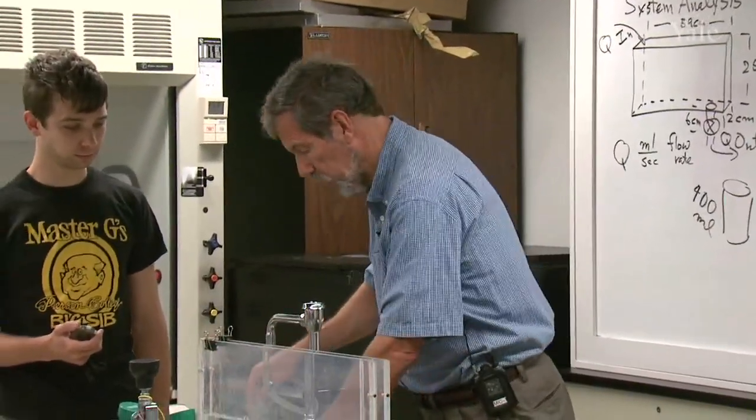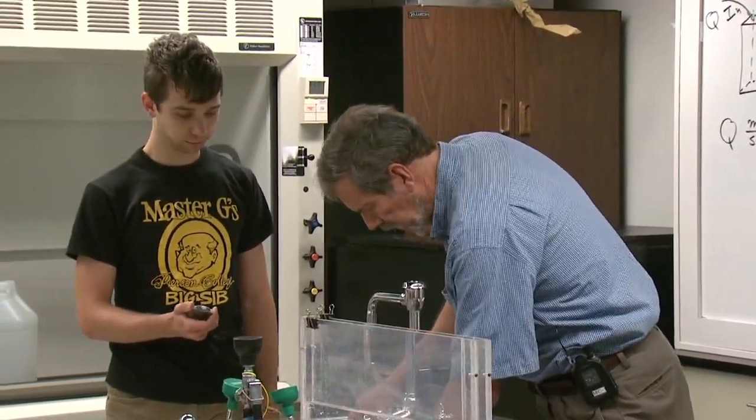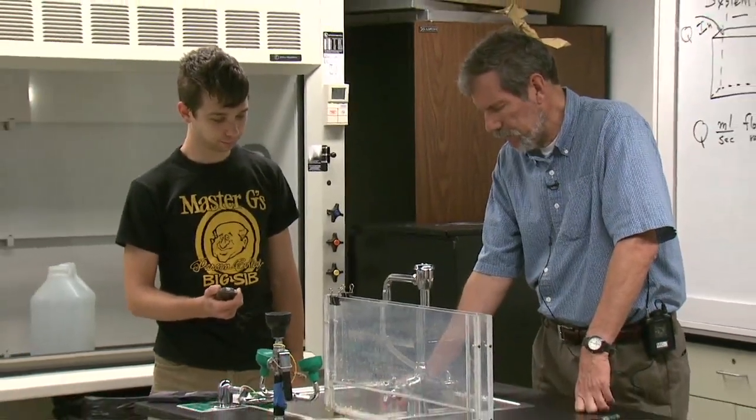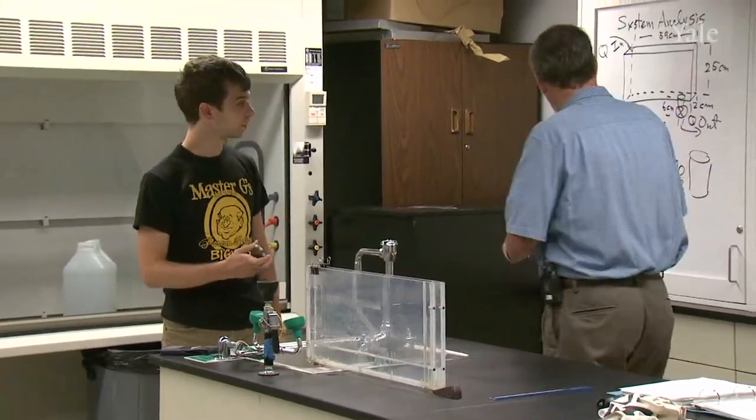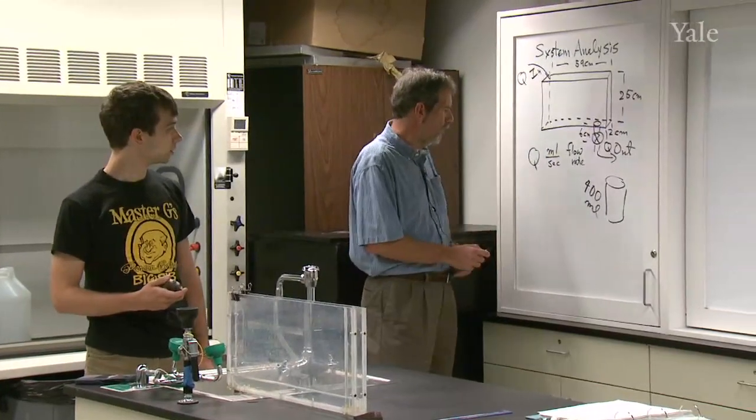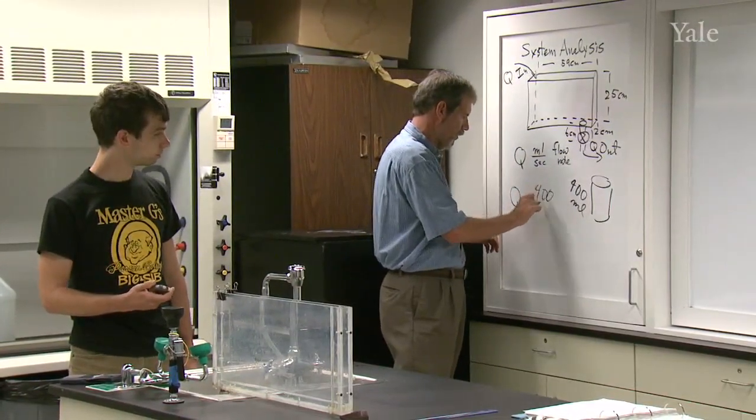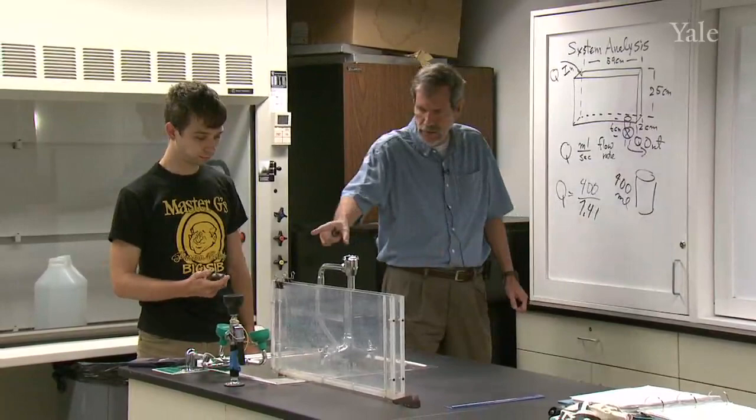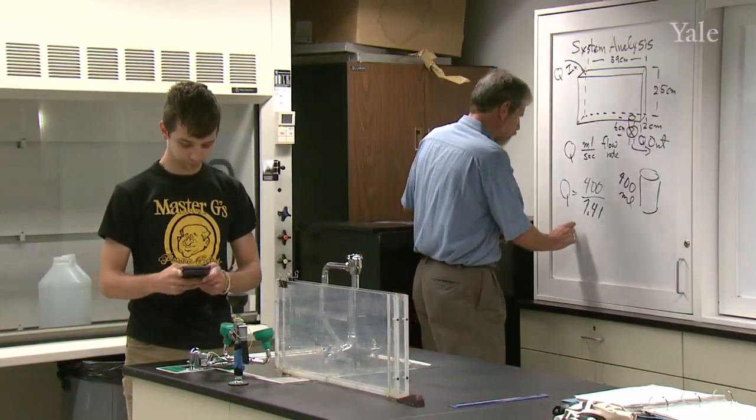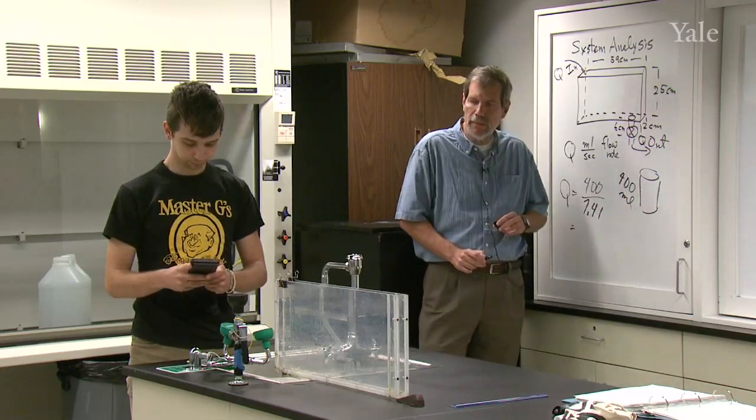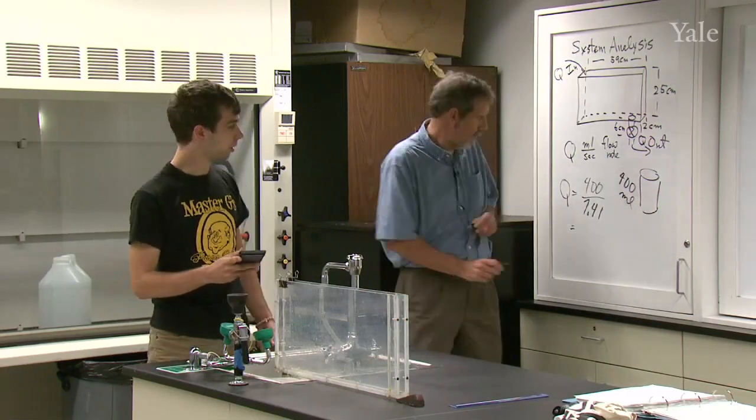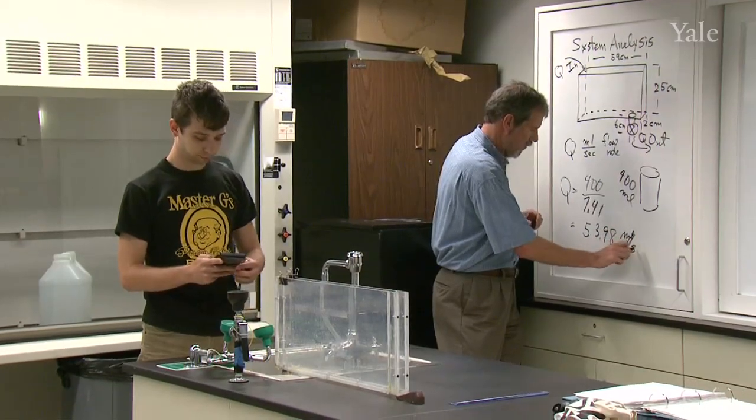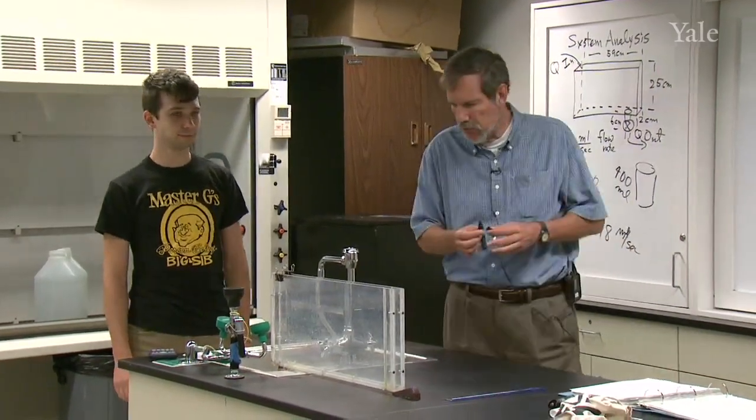And then we will just get the flow rate from that. So I will give you a countdown. Three, two, one, start. And as soon as that reaches the top there, you can stop it. So the flow rate coming out of the valve right now is Q is 400 milliliters divided by 7.41. Can you do that calculation there for me? 53.98. And the units on that are going to be milliliters per second. So we're going to be doing this over and over again with different flow configurations.